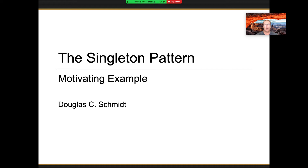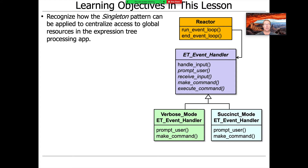Now we're going to turn our attention to one of the most notorious or controversial patterns in the Gang of Four book, which is the so-called Singleton pattern. I'm going to show you how we apply the Singleton pattern to centralize access to global resources in our expression tree case study without requiring the need for global variables.